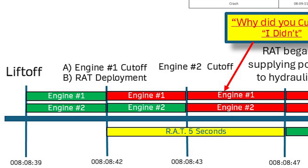In previous videos, I showed that the RAT deployment had occurred at 08:08:42, which is right when engine one cut off. But that's not possible — I no longer have confidence in that because it really requires both engines to be cut off in order to trigger. So we're changing that here.